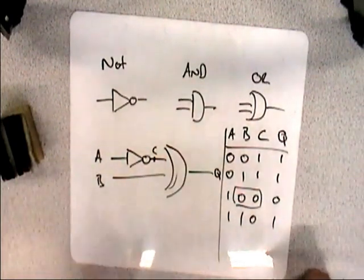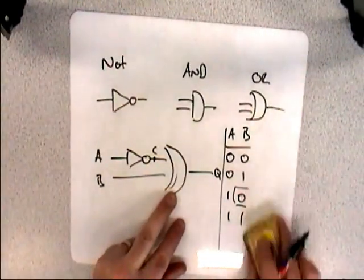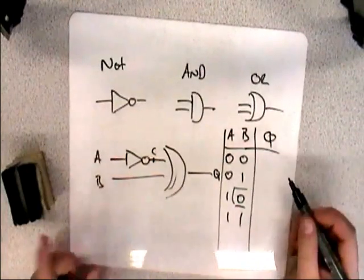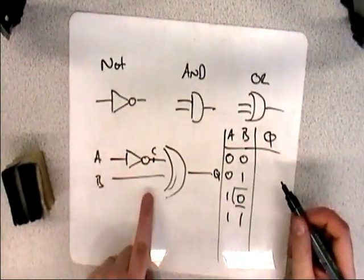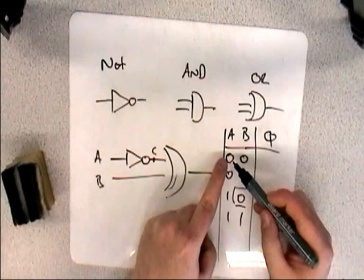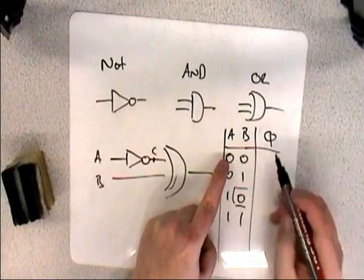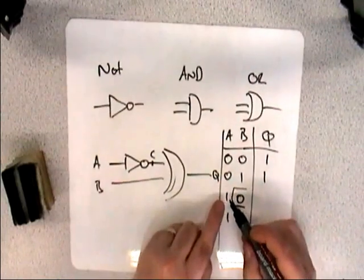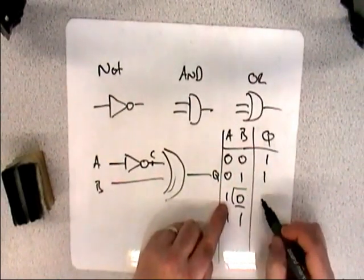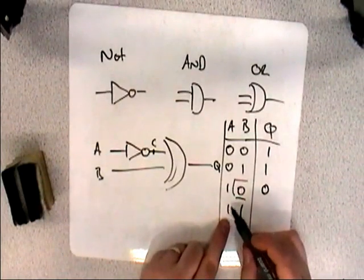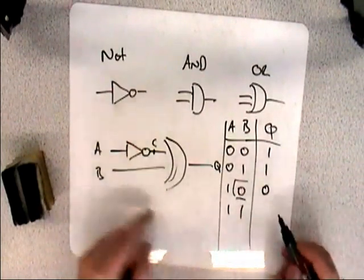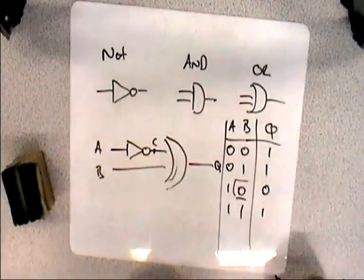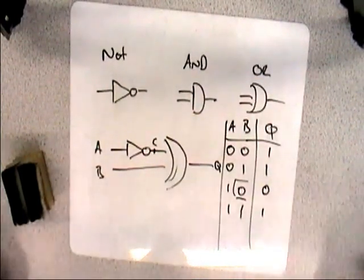Again, you could do that in one step. What you're looking for, if I just rub these out. If you want to do it in one step, it's the opposite of A or B. Opposite of A is 1. 1 or 0, yes, that's true. 1 or 1, yes, that's true. Opposite of A is 0. So 0 and 0 is false. Opposite of 1 is 0. 0 and 1, that's true. Again, if that's a bit too much, feel free to do the middle step. But that is about as complex as it gets at GCSE.